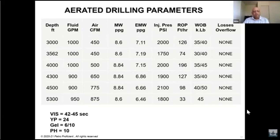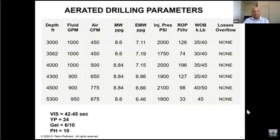You can see how the ROP is significantly higher — in some cases as high as 196 feet per hour, with average ROPs of 60 to 90 feet per hour — dramatically high compared to conventional drilling. Weight on bit is slightly higher than normal but nothing unusual.